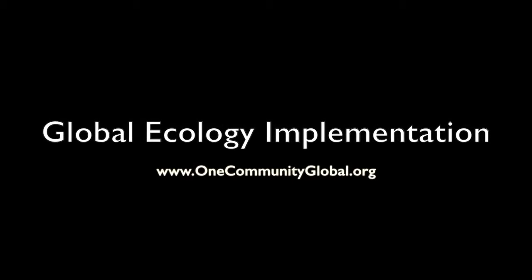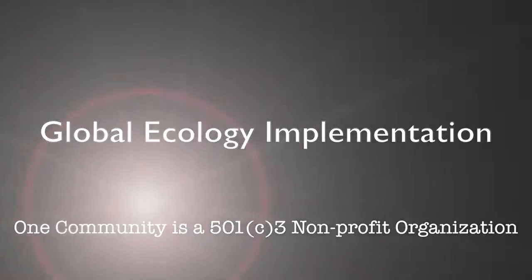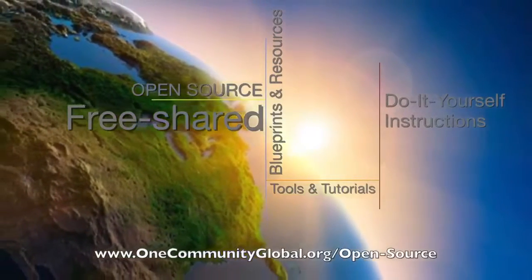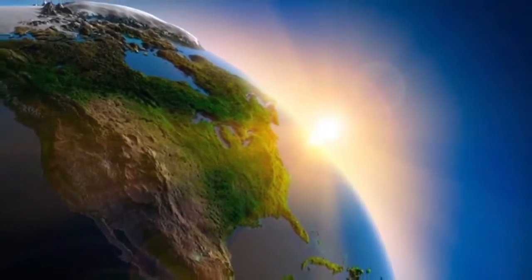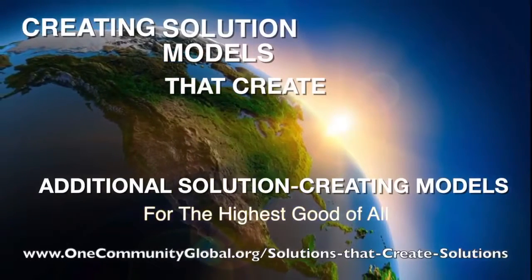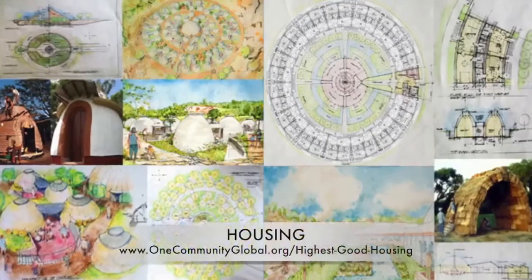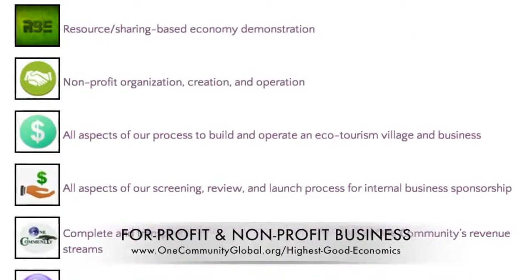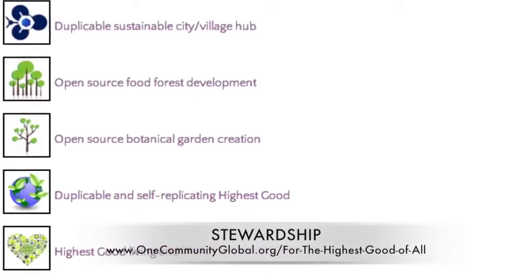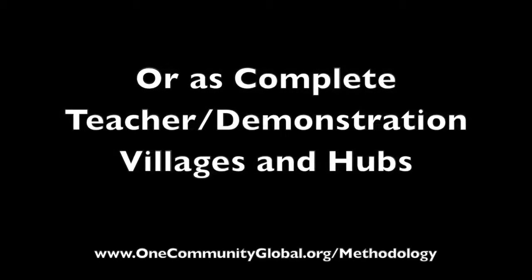Global Ecology Implementation — One Community Weekly Progress Update Number 147. One Community is a 501c3 non-profit organization creating open source and free shared blueprints and resources, tools and tutorials, and do-it-yourself instructions for highest good living — creating solution models that create additional solution-creating models in the service of all life on this planet. This includes highest good approaches to food, energy, housing, education, for-profit and non-profit business creation, society, and true earth stewardship. We are creating all these things to be implementable as either individual components or as complete teacher demonstration villages and hubs.